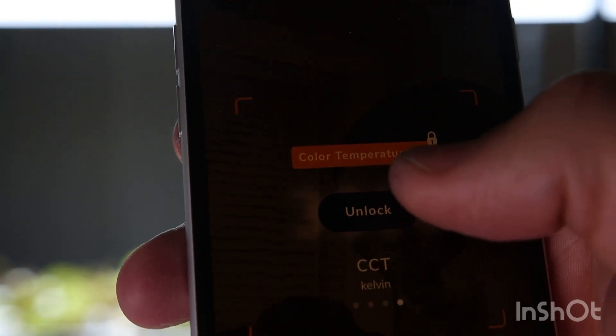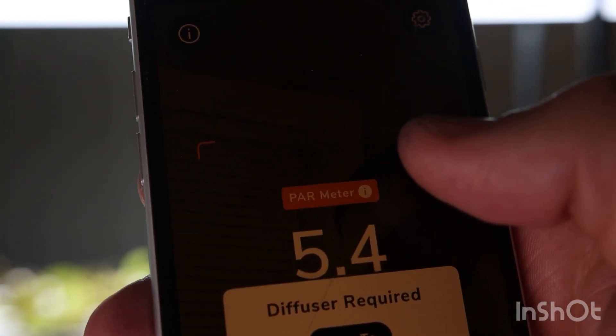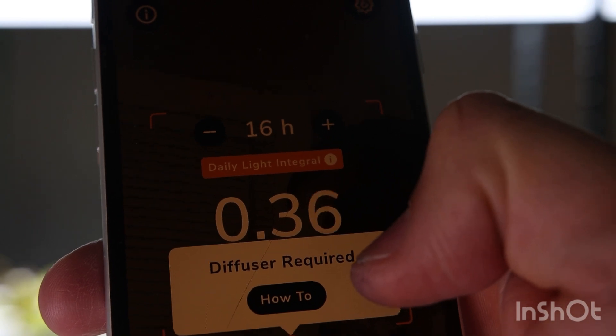So like color temperature, light meter, daily light integral, and then par meter. We want to go to daily light integral and then the diffuser required means we want to put torn basic printer paper on top over the camera because this app was designed to use basic torn white printer paper as a diffuser.